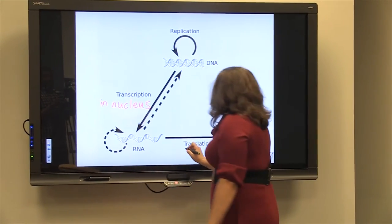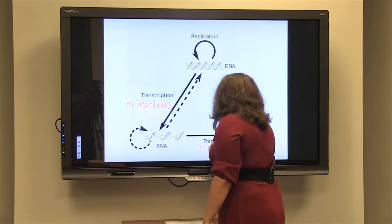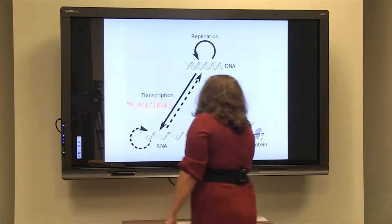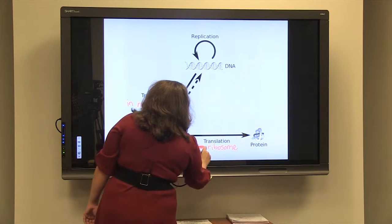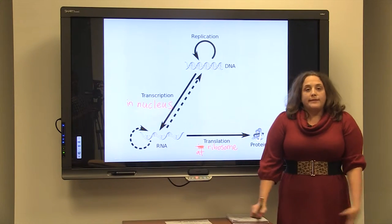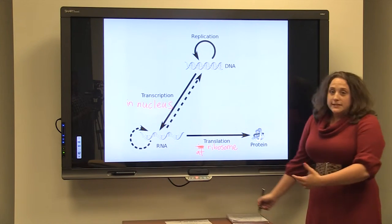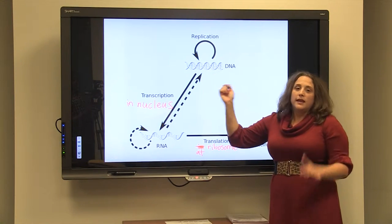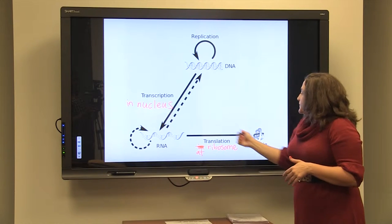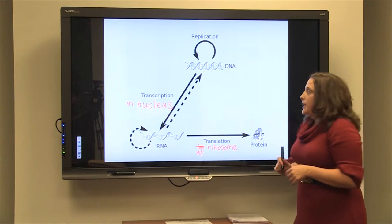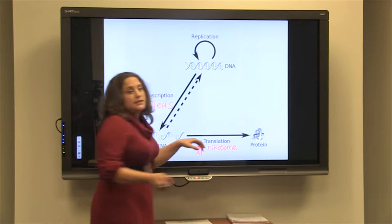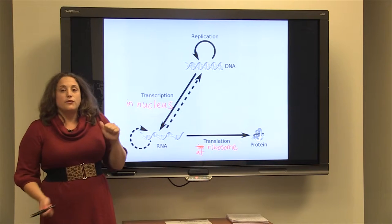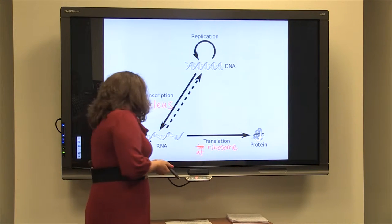At the ribosome, and you know that ribosomes are in the cytoplasm, outside of the nucleus, and so that's why it's such an important thing to know because the DNA is trapped there. It cannot leave. So the RNA helps us get the information that we need. The messenger RNA is the one that carries the transcript to the ribosome, and the transfer RNA are the ones that bring the amino acids to the ribosome.